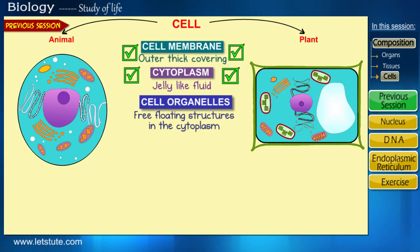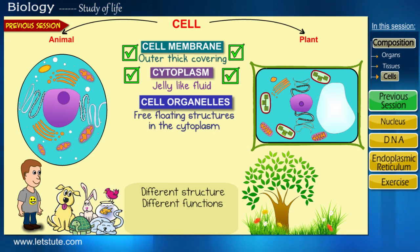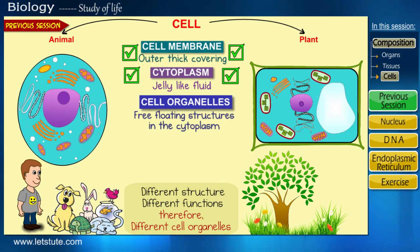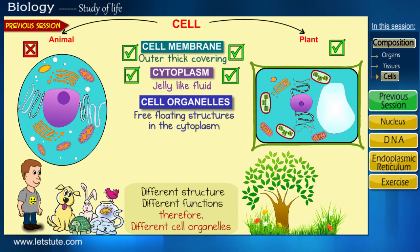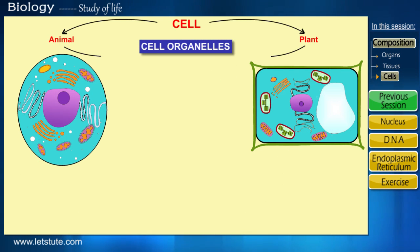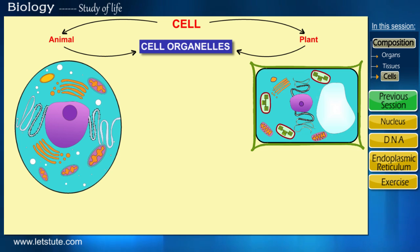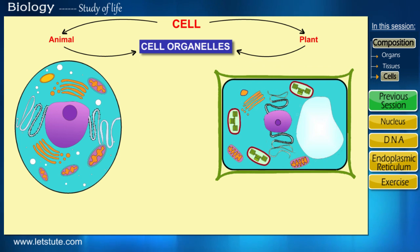In our last session, we also discussed that plants and animals are different based on their structure and functions. So to perform these functions, their cell organelles will also be different. Some organelles may be present in a plant cell but absent in an animal cell, or vice versa. But majorly they have similar cell organelles which function together to keep the cell alive. In this session, we will study the organelles within the cell in detail and simultaneously learn the differences between an animal cell and a plant cell with respect to their components.